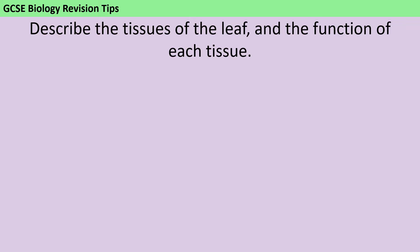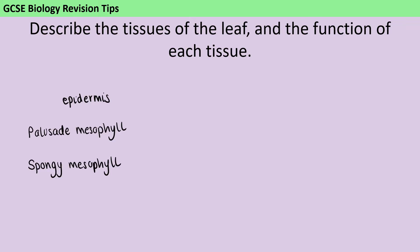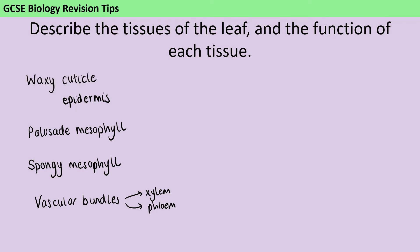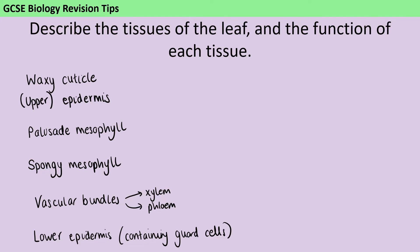You should have named the epidermis, the palisade mesophyll, the spongy mesophyll, and the vascular bundles containing the xylem and the phloem. You may also have included the waxy cuticle, and you may have split the epidermis into the upper epidermis and the lower epidermis, which is where we find the majority of the stomata, surrounded by the guard cells.